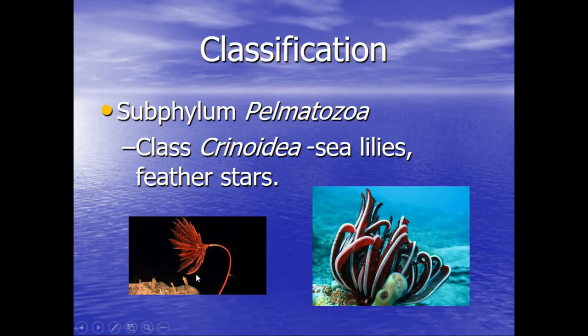Class Crinoidia are the sea lilies and feather stars. Here is a sea lily and a feather star down here at the bottom. They are filter feeders, which means they just sit there and filter microscopic organisms out of the water, and that is what they eat. So they are not very active. They stay in one spot and they let their food come to them.